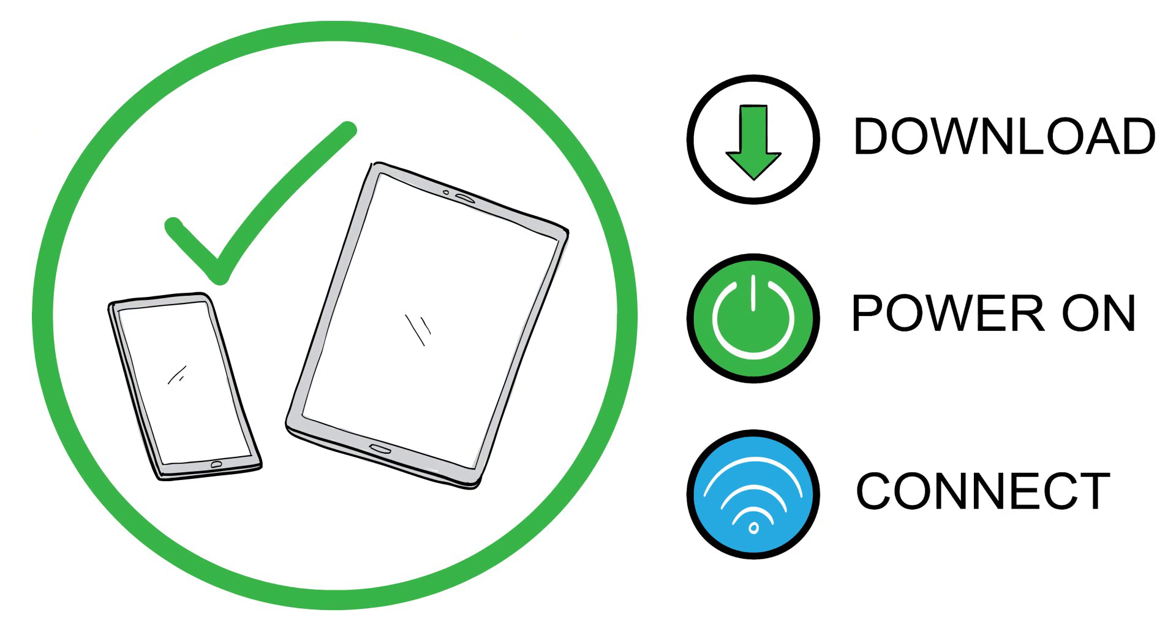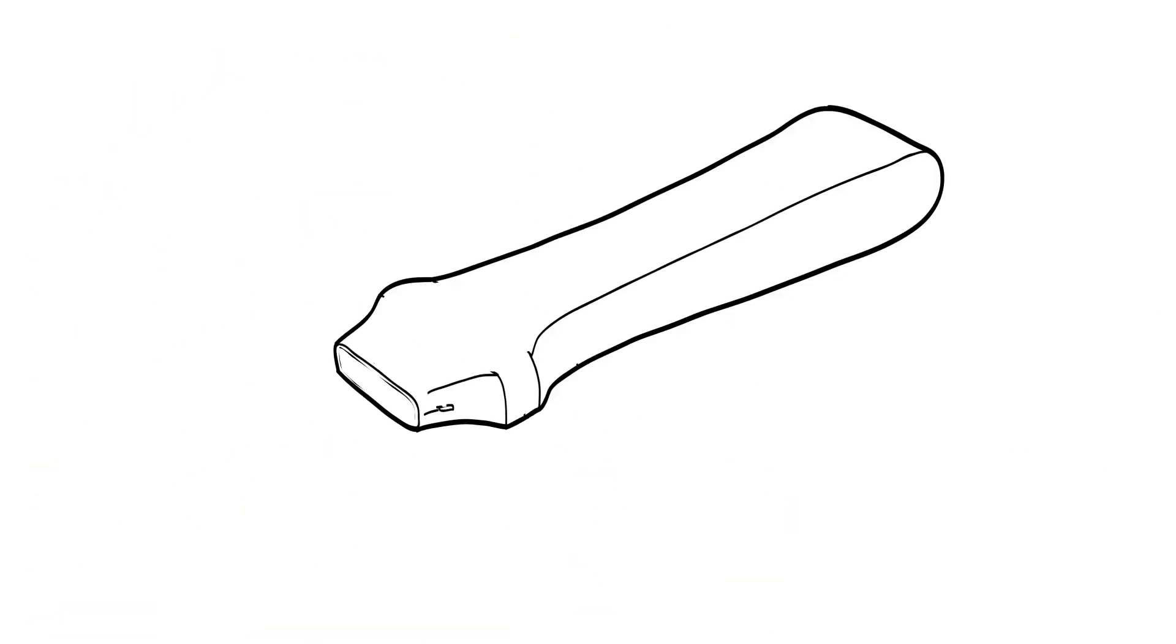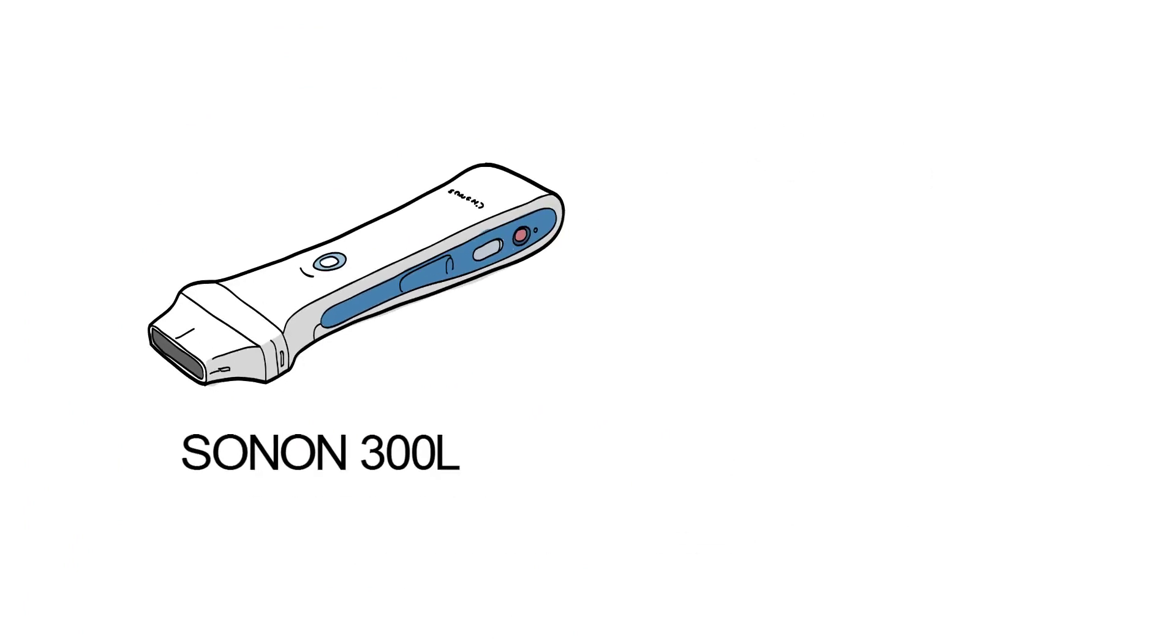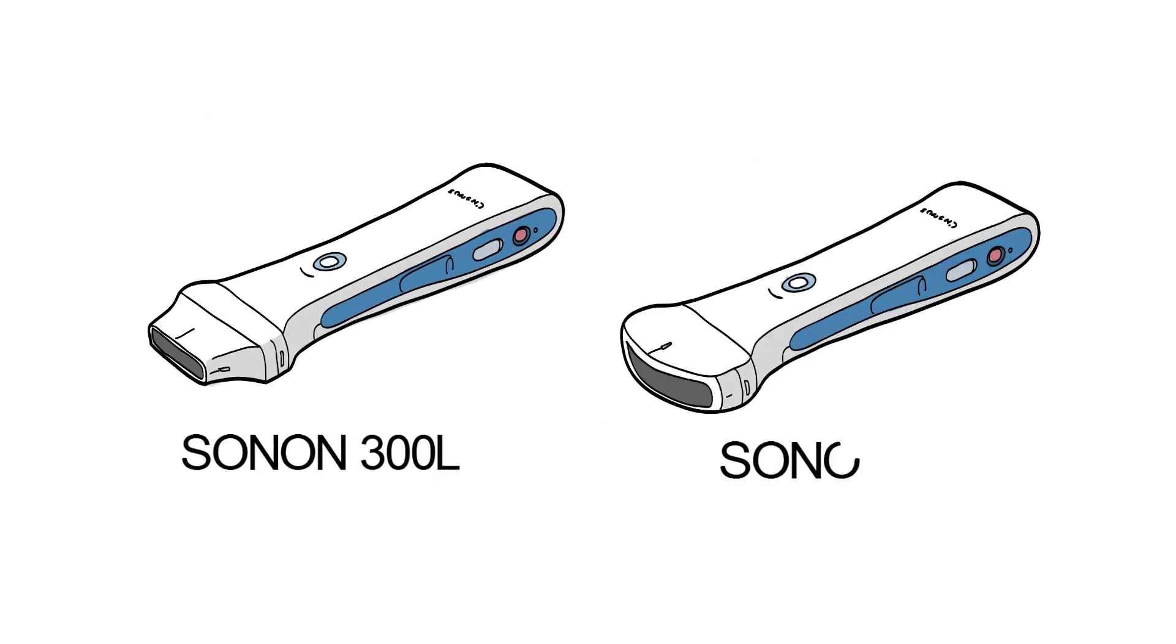The Sonon product family consists of two products, our linear probe Sonon 300L and our convex probe Sonon 300C. Each probe comes with free lifetime support to eliminate any worries.